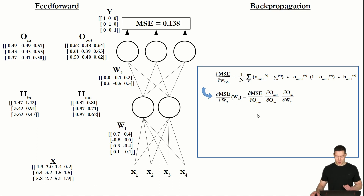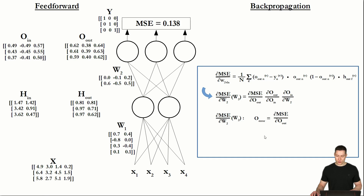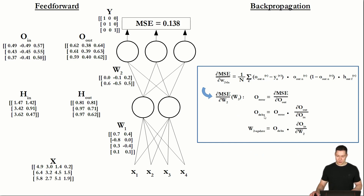Before we do that, I'd like to rearrange this equation because we are not going to calculate it in just one step. Instead we are going to calculate one step at a time, similar to what we did during the feed-forward. We will call the first step the output error, the next step the output delta, and the last step is the weight matrix 2 update.